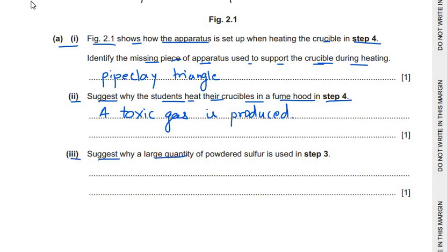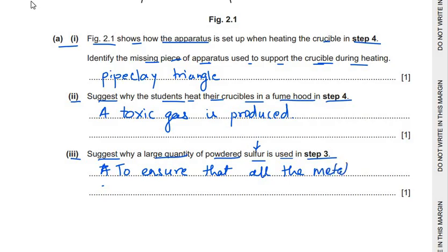The next part asks why a large quantity of powdered sulfur is used in step 4. If we don't use sulfur in a large quantity, we can't be sure whether all the metal has reacted or not. The reason is to ensure that all the metal has fully reacted — sulfur is used in excess for this purpose.